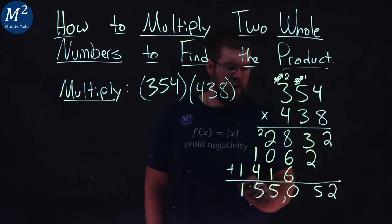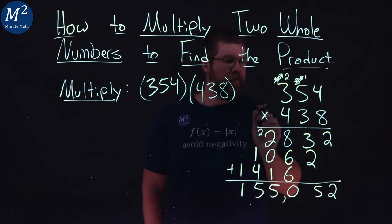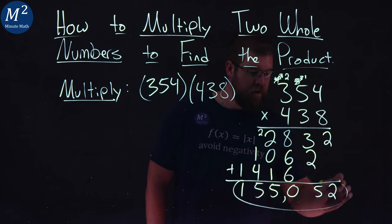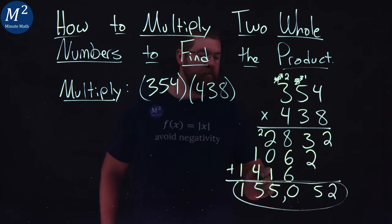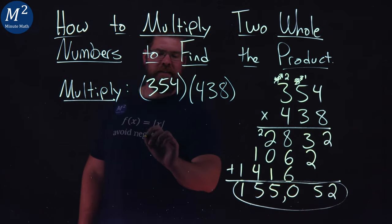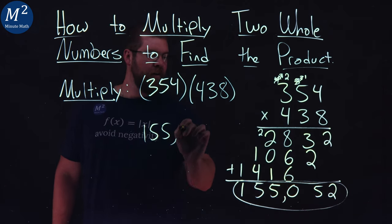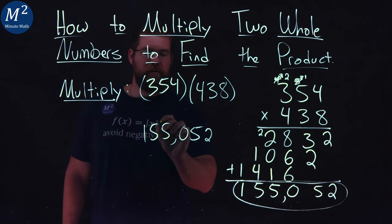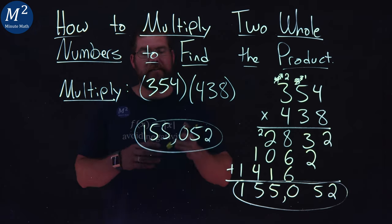And there we have it. We have our answer. 354 times 438 multiplies out to be 155,052. It's a little separated there, but if you want to see it again, 155,052, a little easier to see there. And that is our final answer.